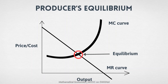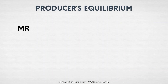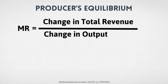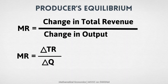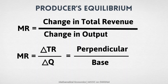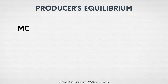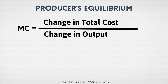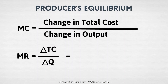Now note the figure. Price and cost are measured on the Y-axis and output is measured on the X-axis. The MR curve slopes down and the MC curve initially slopes down, reaches a minimum, and then rises, and E is the equilibrium point. By definition, MR is the change in total revenue by change in output. Therefore, the ratio delta TR by delta Q gives perpendicular by base, which is defined as the slope of a curve. Similarly, MC is the change in total cost for a unit change in output. Therefore, the ratio delta TC by delta Q gives the slope of the MC curve.